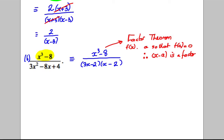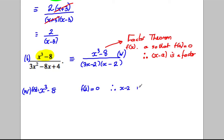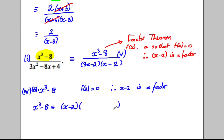I'll mark this as working. For f(x) = x³ - 8, f(2) = 8 - 8 = 0, therefore (x - 2) is a factor. So x³ - 8 can be written as (x - 2) multiplied by something else. To get x³ we need x², since x² times x gives x³.